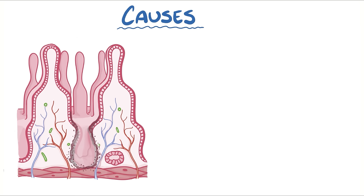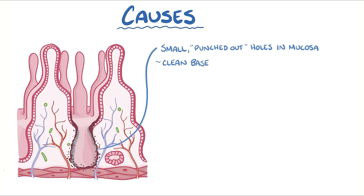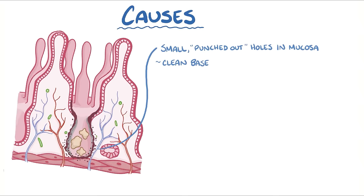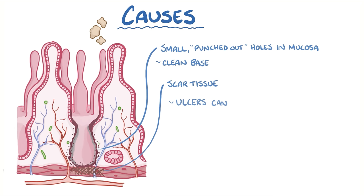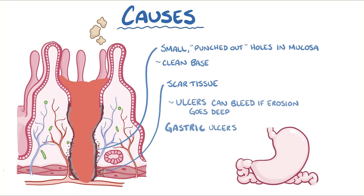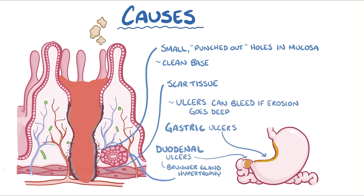Peptic ulcers that result from these mucosa-damaging mechanisms are usually small, round, punched-out holes in the mucosa. The ulcers usually have a clean base, because the hydrochloric acid secretions and the constant churning actually keep debris out of the ulcer. Typically beneath the base is a layer of scar tissue and blood vessels, and occasionally the ulcers can bleed if the erosion goes deep. Gastric ulcers typically form in the lesser curvature of the antrum. Duodenal ulcers usually develop right after the pyloric sphincter, and there's usually Brunner gland hypertrophy, which is the body's attempt to produce more mucus to protect the damaged area.